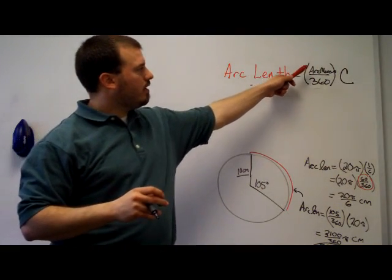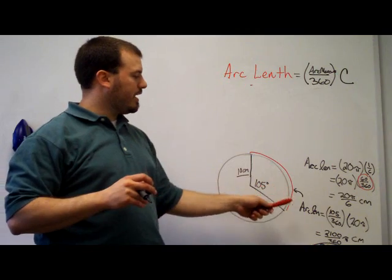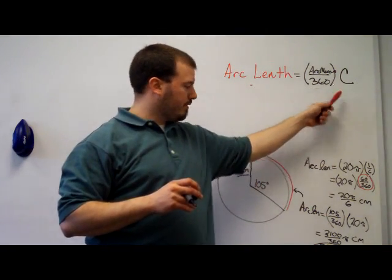So you're going to multiply the arc measure over 360 times the circumference. The fraction, arc measure over 360, in this case it was 105 divided by 360 times the circumference.